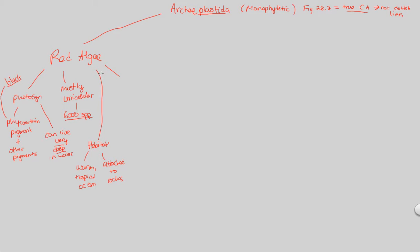A final fun fact about red algae that I'd probably remember: a type of red algae is porphyra. Porphyra is actually what people use for sushi wraps — otherwise known as nori in Japanese. This is the actual wrap that sushi is put within, and that is a red algae. Very easy to remember since it's relevant to us as humans. So nori, which wraps sushi, otherwise known as porphyra, is a red algae and is part of the Archaeplastida supergroup of eukaryotes.